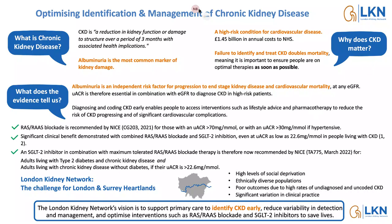CKD is a very high-risk condition for cardiovascular disease and is an independent risk factor for it. It's much more prevalent in people with diabetes, particularly type 2 diabetes, and people with hypertension, which probably accounts for about two-thirds of people with CKD. There is good evidence that failure to identify, code, and therefore treat CKD is linked with doubling mortality, so it's an important disease area.